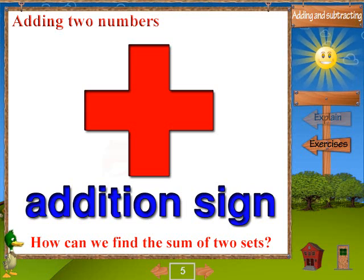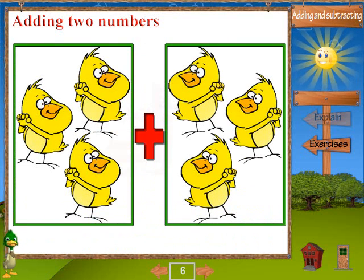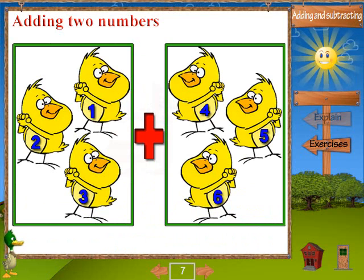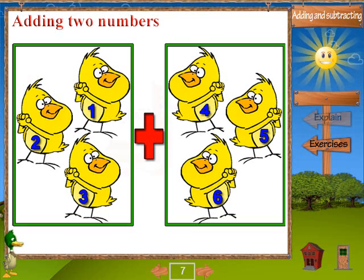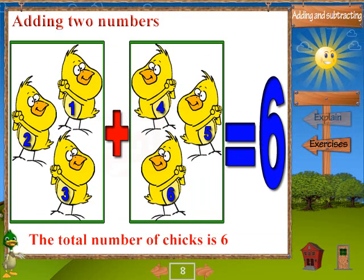To find the sum of two sets we will use the addition sign by putting it between the two sets as follows. After that count the number of chicks in the two sets as we see in the following picture. Then the total number of chicks is six as we see in this picture.